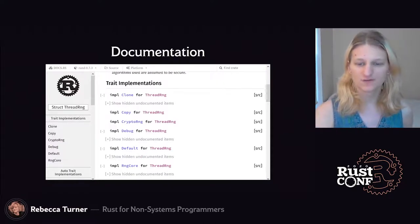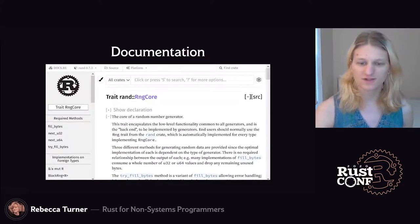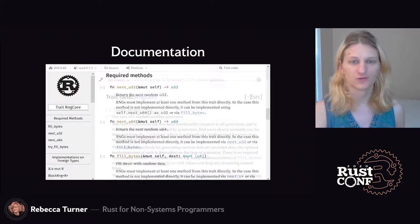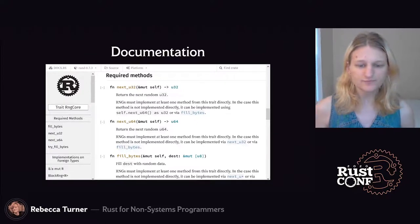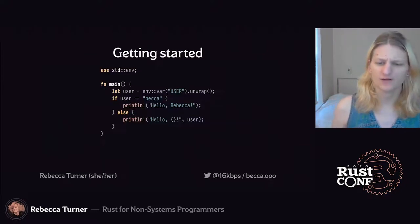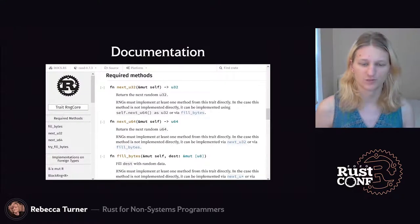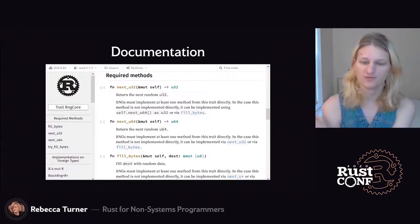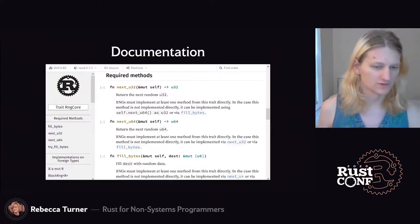RNGCore looks interesting, so let's find out about that one. We see a description at first, and then if we scroll down, we can see the required methods and their documentation. Having a uniform style and interface for documentation is really helpful when exploring a library's API and when jumping between multiple libraries.